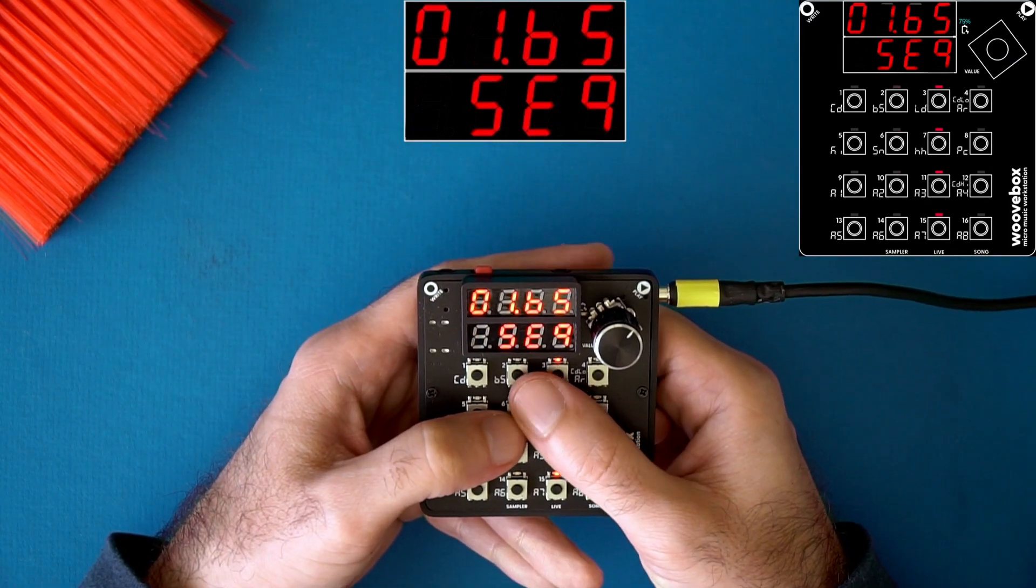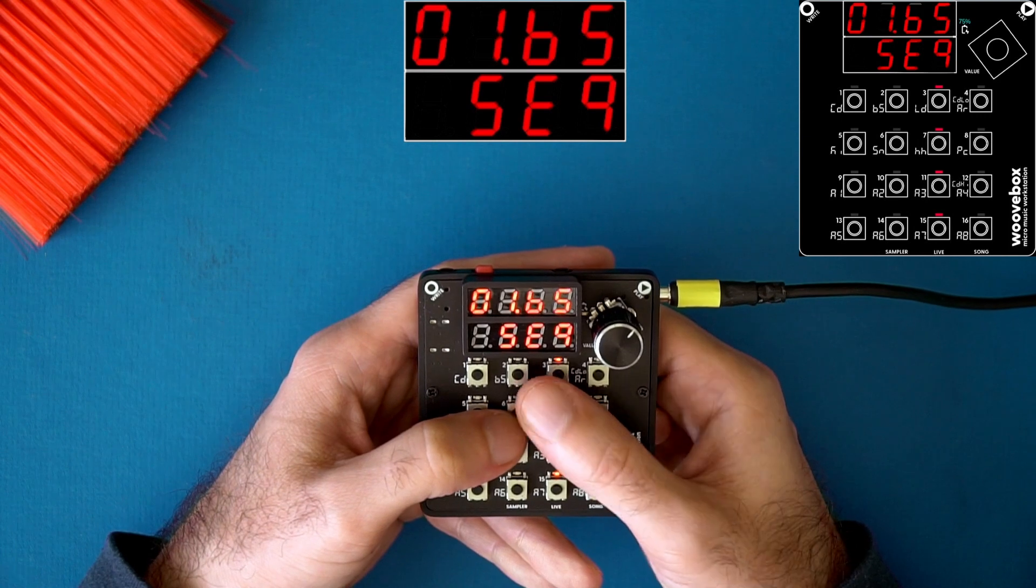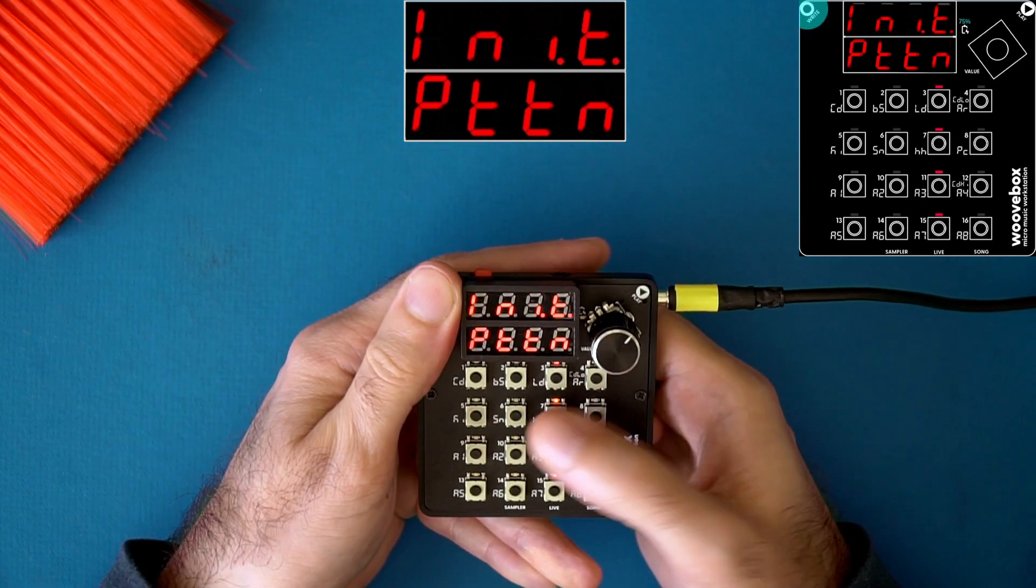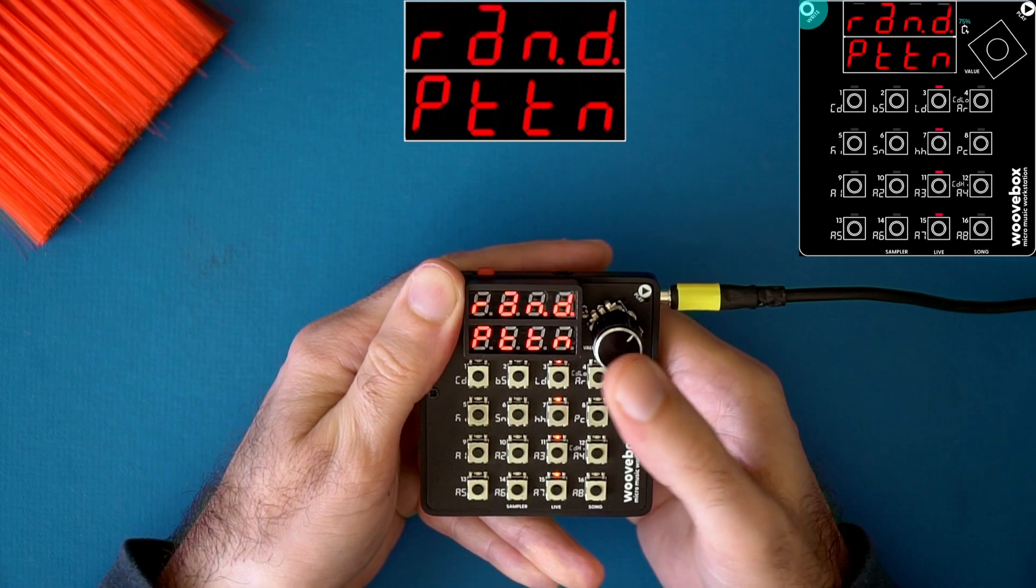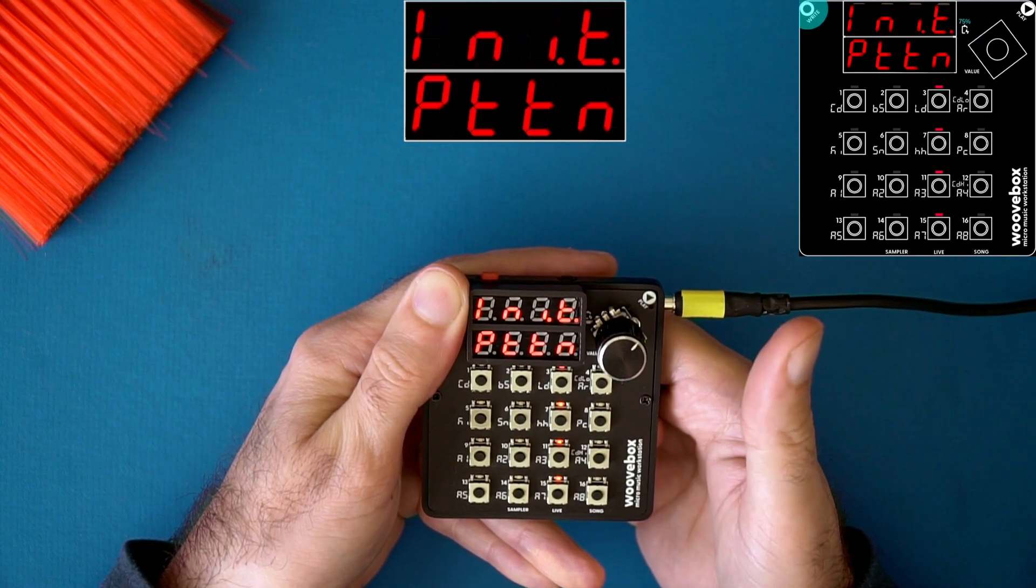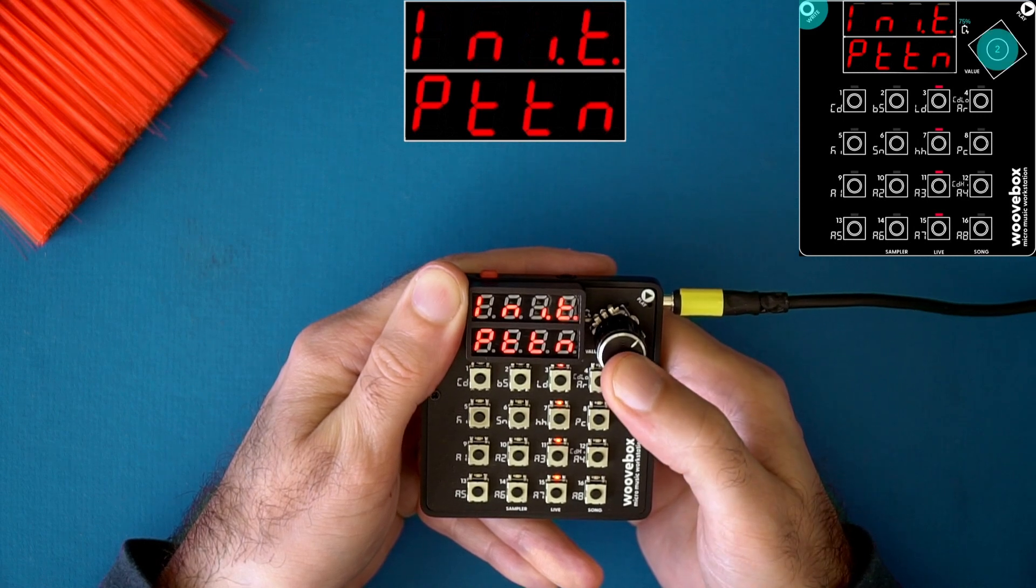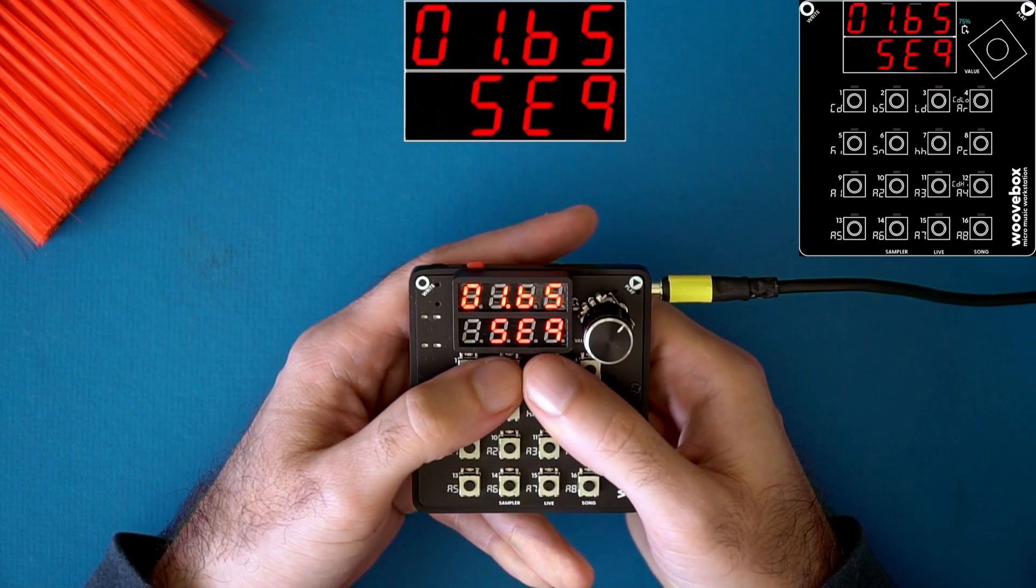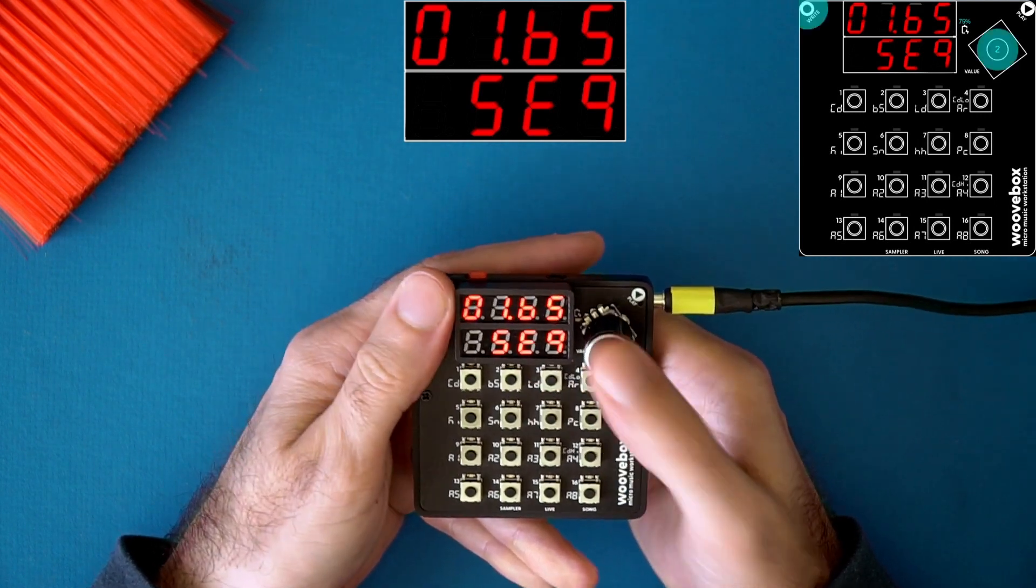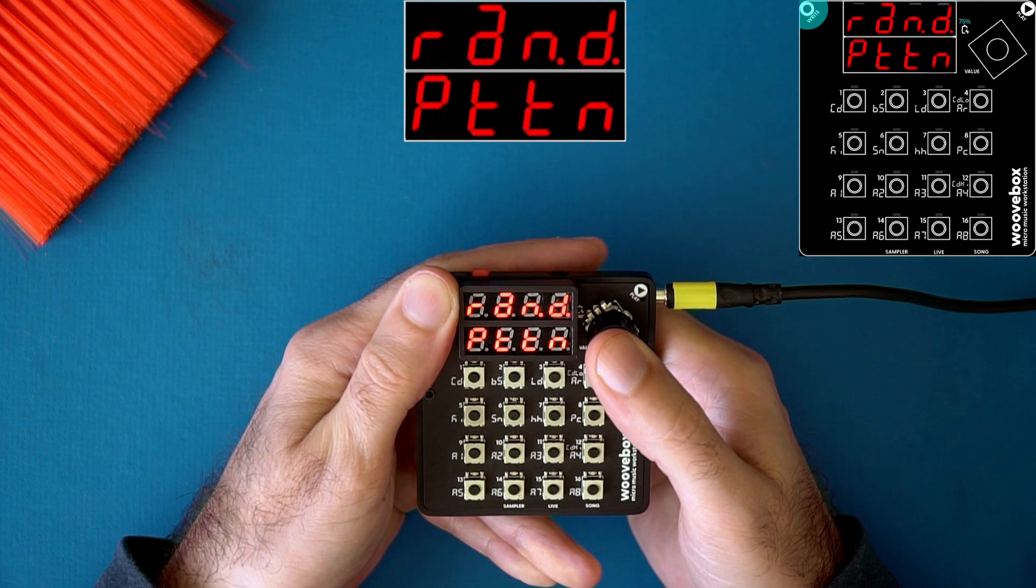Tip number seven is always look in the context menu. Many of the Woof Box pages will have a context menu. You access it by holding right and clicking the encoder. You can continue to click the encoder to browse the various options. If you want to select one, you press and hold. There are often very useful features in the context menu, so don't forget to check it out. One of the ones I like is this one, Random Pattern.